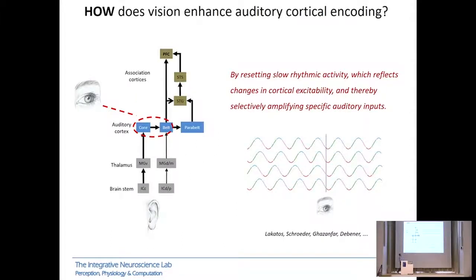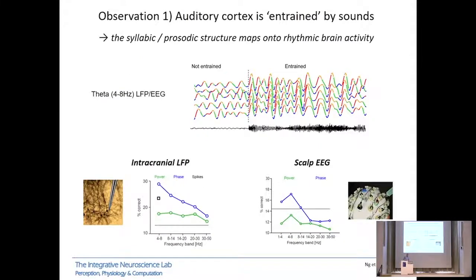We then tried to understand how this mechanistically happens. One answer put forward by Peter Lakater, Charlie Schroeder, and many others is that this happens by resetting slow rhythmic activity, which reflects changes in cortical excitability, thereby selectively amplifying certain auditory inputs — and that's where I got distracted by looking at rhythmic brain activity. This hypothesis is driven by a number of observations: auditory cortex seems to be entrained by auditory inputs, where syllabic or prosodic structure maps onto auditory cortical activity. We see this entrainment as a tight alignment across trials of the phase or power of ongoing rhythmic brain activity, visible both in intracranial LFPs — where phase is entrained more than power — and in human scalp EEG or MEG activity.